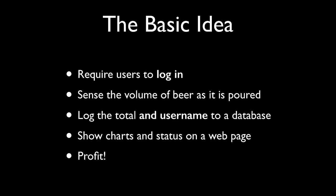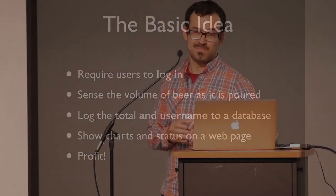After a few minutes I realized if we could figure out who was tied to each pour, there's even more stuff we could show — we could say Mike's drinking more than his share. So, revised plan: step one, make everyone log in; sense the volume as it's poured; log it; show charts; profit. And then after a few more minutes of thought I realized — wait, no one's going to voluntarily log in.